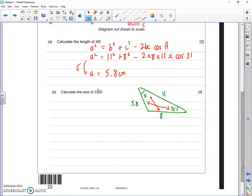So if we said that sine 31 over 5.8 is equal to sine X over 8. We don't need the 11, because that's not paired up with anything particularly useful.